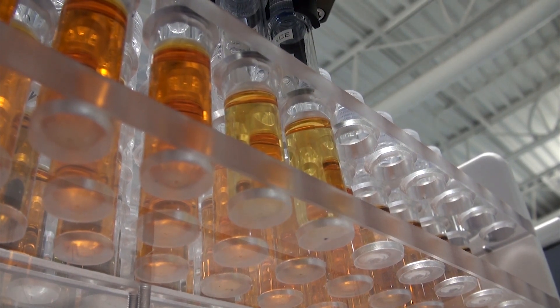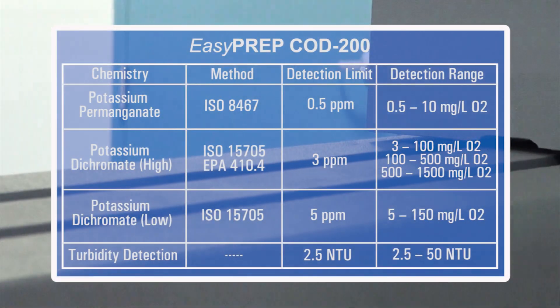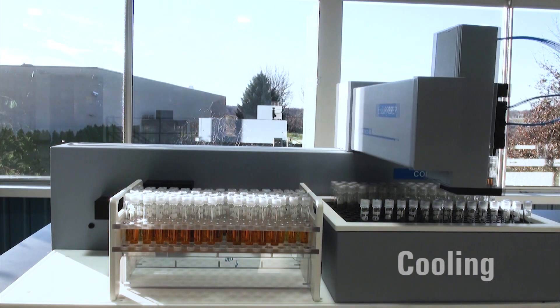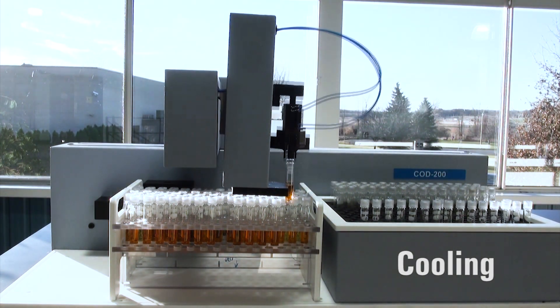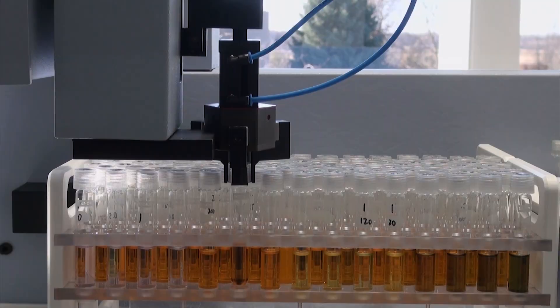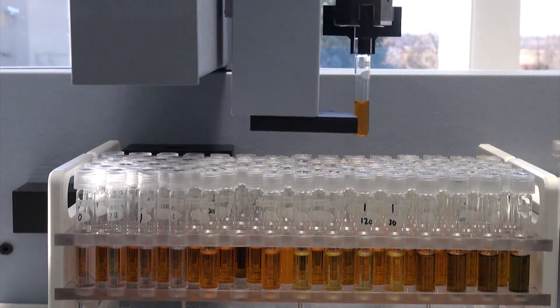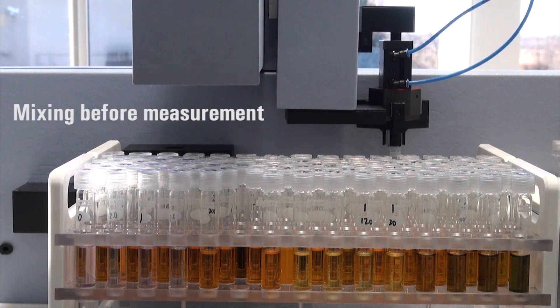COD 200 allows chemists to perform other value-added tasks while the system is in operation. After digestion, the COD tube is moved to the rack for cooling. Once cooled, it is moved to be mixed again prior to measurement with the onboard LED spectrophotometer. The parameters of the mixing function are user-defined.